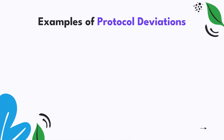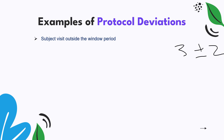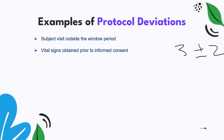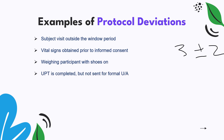Let us understand what exactly are the examples of protocol deviation so you can practically understand how deviations are identified. A protocol deviation can occur if a subject comes for a visit outside the window period — for example, plus or minus two days. If he comes outside that range, that is a deviation from the protocol. Another example is vital signs obtained prior to informed consent — since no study activity should occur before consent is given, that timing difference is a protocol deviation.